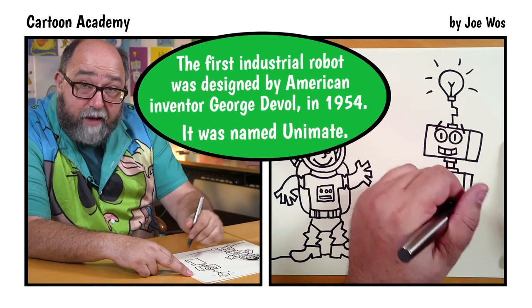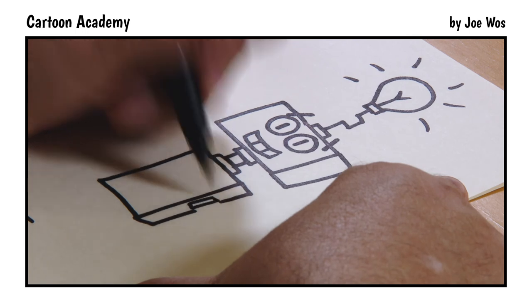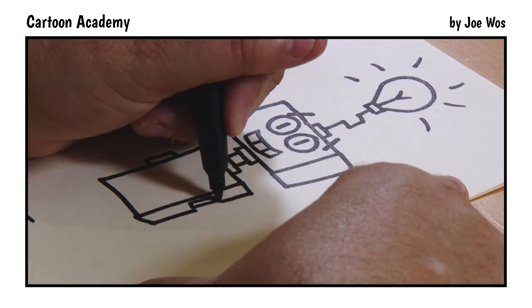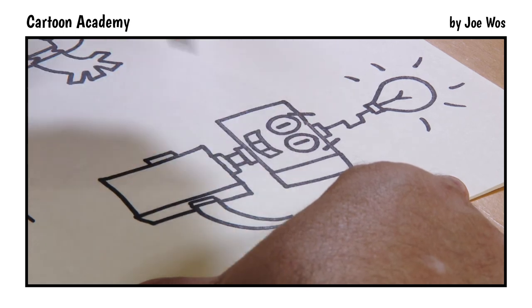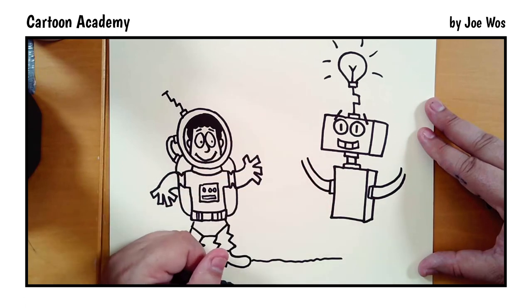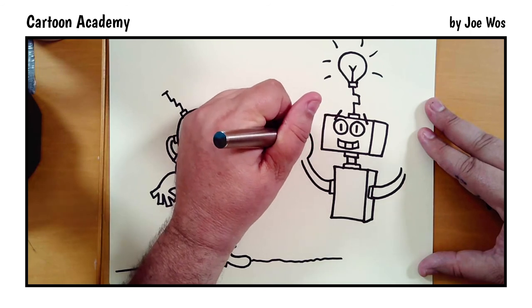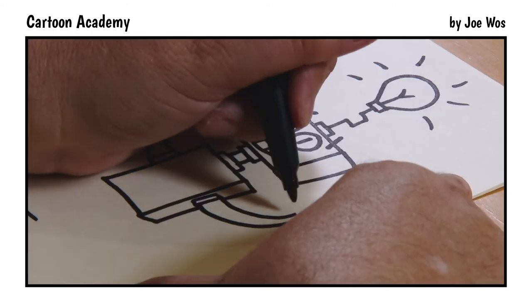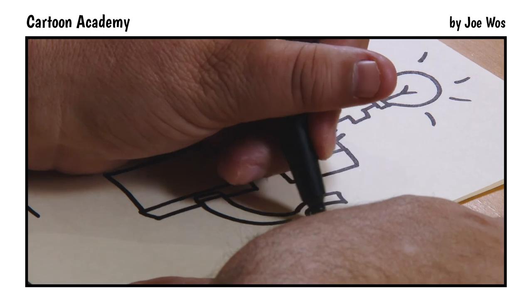The reason we left that gap is because that's where we need to add the arms. Down, over, and up. Down and in. And now our arms. One, two. One, two. The hands, we're going to give them little claws. We come around, letter U, over, and in. Around, letter U, over, and in.